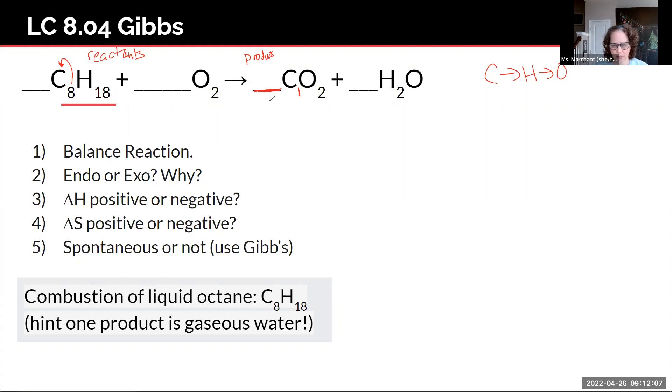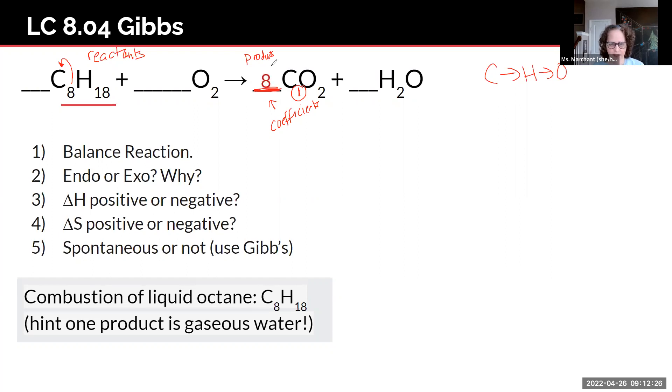So remember these items in front are your coefficients and the coefficients are done with multiplication. So the coefficient times the number of elements would give you the total number of carbons. So what times one is eight? And that is eight. So we put an eight there for the coefficient. And now we balance what? We balance the carbons. So now we balance the hydrogens.